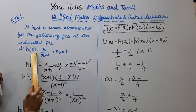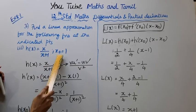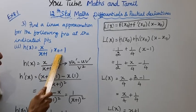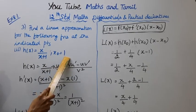h of x equals x divided by x plus 1. The indicated point is x naught equal to 1.